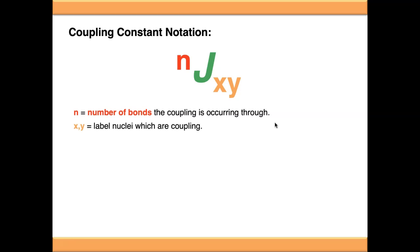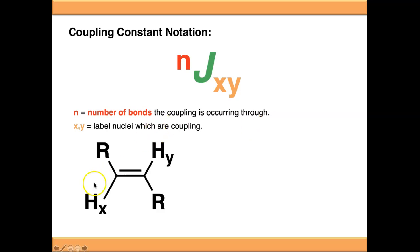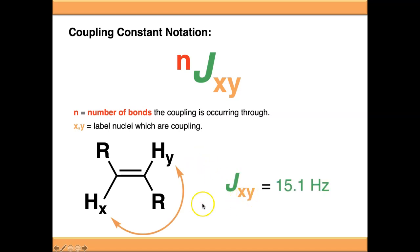X and Y are just labels — they can be whatever you want, as long as they label the nuclei which are interacting. Looking at this example, we have two nuclei labeled HX and HY. The coupling between them would be called J_XY. To work out the N value, we count how many bonds the coupling occurs through: 1, 2, 3 — so this is a ³J coupling.